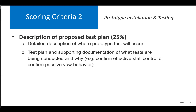The second scoring criteria is the proposed test plan, which includes your test location and test site. If you're planning to partner with a regional test center, that is really good information to have and they can provide detailed information about their test site that is much appreciated in proposals. We want to see the test plan and supporting documents detailing what tests will be conducted and why — for example, confirming the effectiveness of stall-controlled or passive yaw behavior. Please detail what tests are expected and why they're important at this prototype stage.